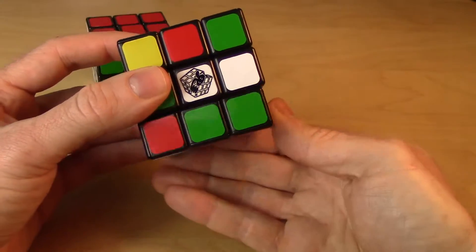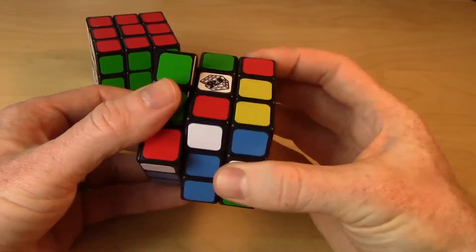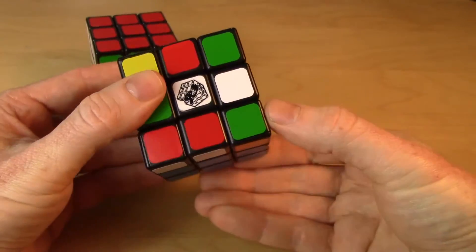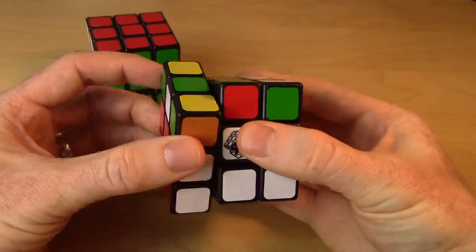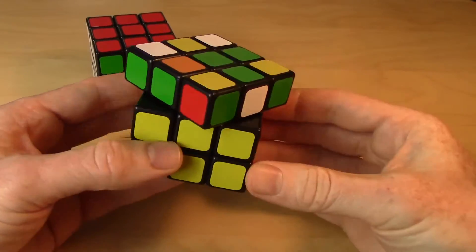Slide it over. So now it's there. Now do our 3-cycle. And then move it back. Undo the setup move. And there we've got our middle layer done.